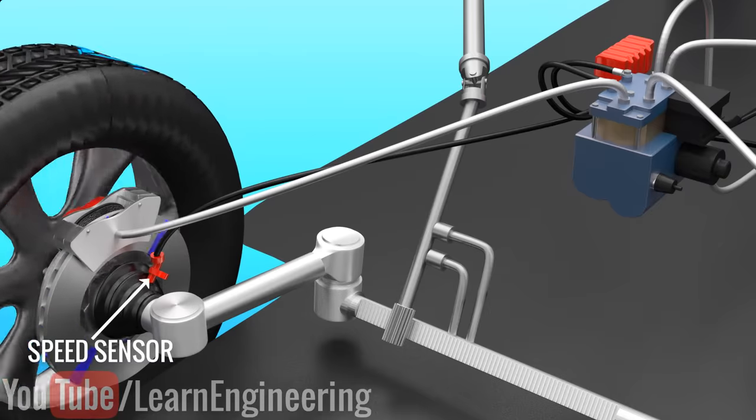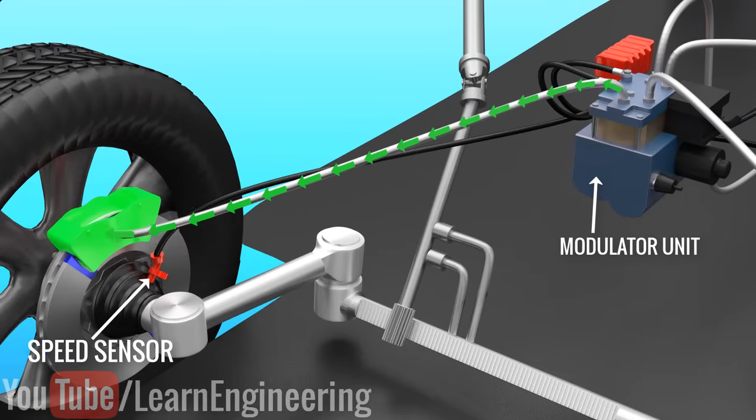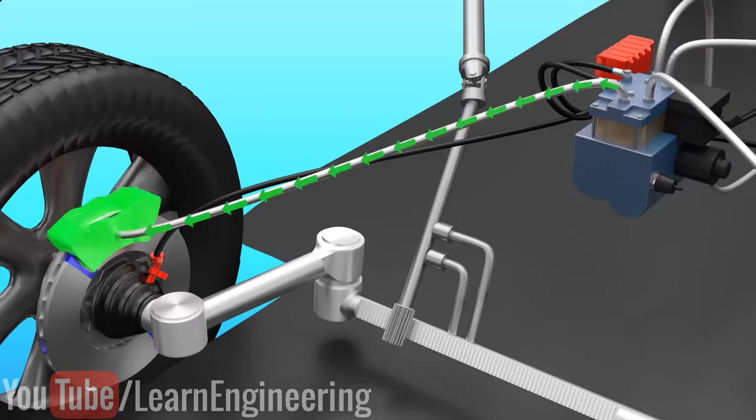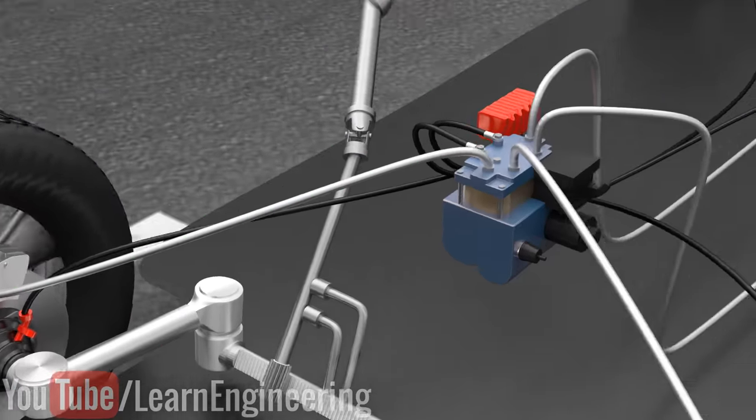The ABS system includes speed sensors attached to all of the wheels. When the sensors detect that a wheel is about to lock up, a modulator unit partially releases the brake pad on that wheel. This way, the wheels will be allowed to spin intermittently during braking.